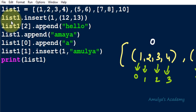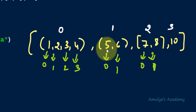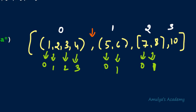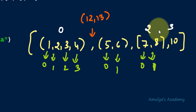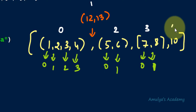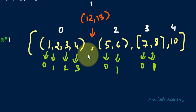The first operation is list1.insert(1, (12, 13)), meaning we insert the tuple (12, 13) at index 1. Currently at index 1 the tuple (5, 6) is present. After insertion, (12, 13) will be at index 1, and all other elements shift: the tuple (5, 6) becomes index 2, the list [7, 8] becomes index 3, and 10 becomes index 4.